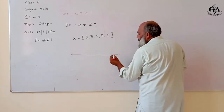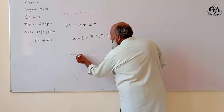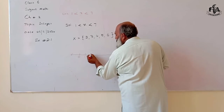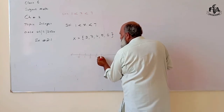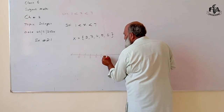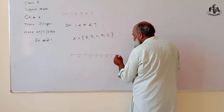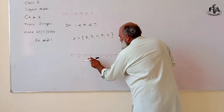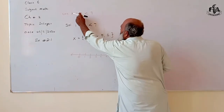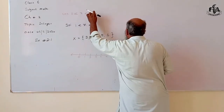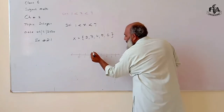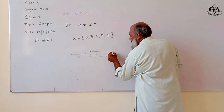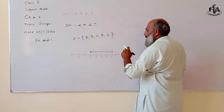Draw a number line with: zero, one, two, three, four, five, six, seven. The numbers between one and seven are two up to six. The numbers that are greater than one and less than seven are: two, three, four, five, six. Show these on the number line.